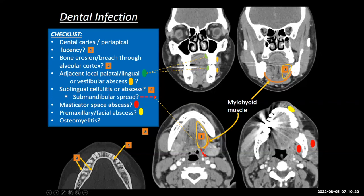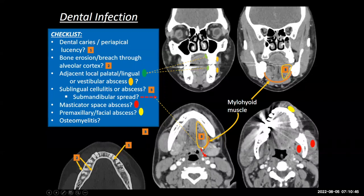The sublingual space is actually contiguous with the submandibular space. The mylohyoid separates the sublingual and submandibular spaces in the coronal plane, but it doesn't run all the way back at the posterior aspect — it has a free edge. Over that free edge, infection in the sublingual space could spread into the submandibular space. So if there's an abscess, you need to tell them if it's extending into the submandibular space as well.